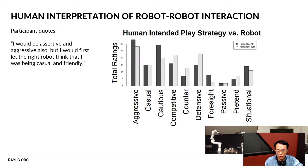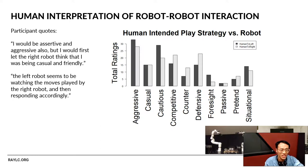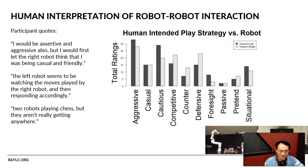This finding suggests that we can not only interpret robot-robot interactions in this game format, but can actually change our intended actions based on that interpretation. Participants came up with really interesting strategies, for example: 'I would be very aggressive, but I would first let the right robot think I was being casual and friendly.' Another noted: 'The left robot seems to be watching moves played by the right robot and then reacting accordingly.' And of course there's always the existential one: 'The two robots are playing chess but they aren't really getting anywhere.'